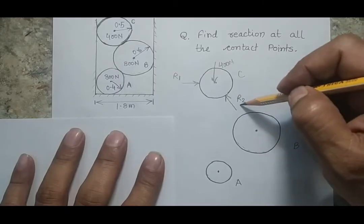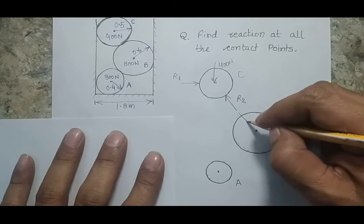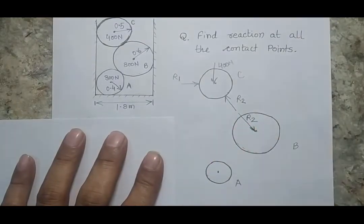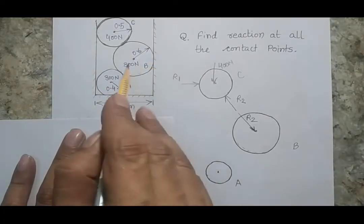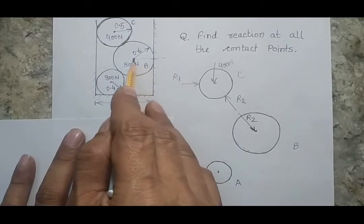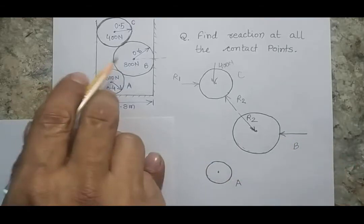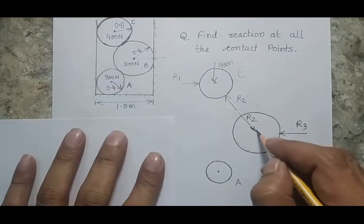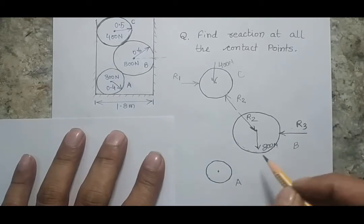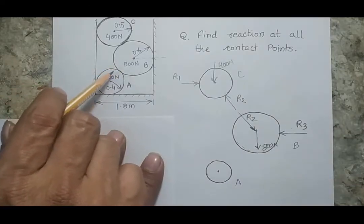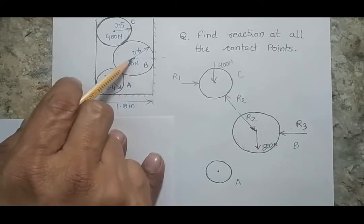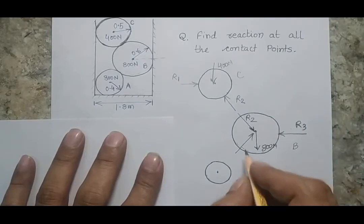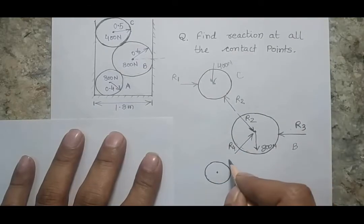For cylinder B, since I already considered R2 as the force from B on C, the equal and opposite force R2 will act in the opposite direction on B. There is a contact at this point, so the line of action passes through the center — this is R3. The weight acts downward at 800 N. The fourth force is the action-reaction between cylinders A and B: a force acting toward the center of B — this is R4.